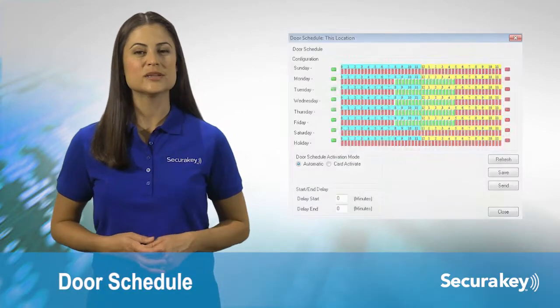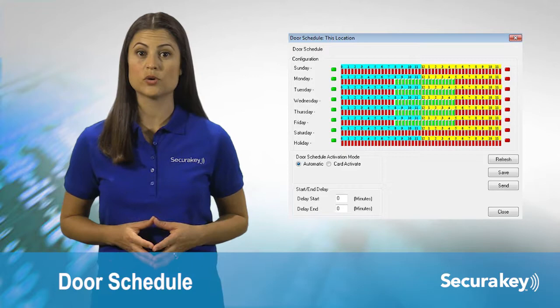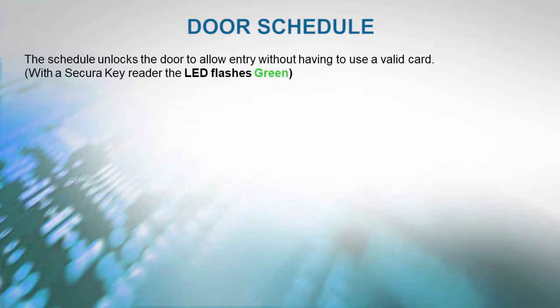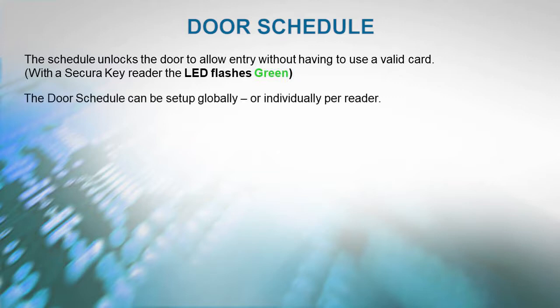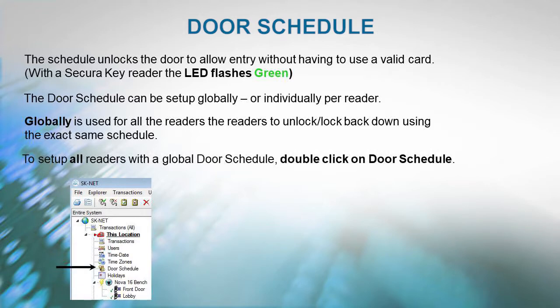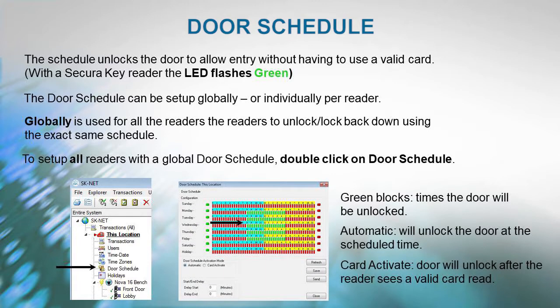A door schedule is a time zone specifically assigned to a door, which causes the door to automatically lock and unlock according to a regular weekly time schedule. This schedule unlocks the door to allow everyone entry without having to use a valid card. The LED on the Secura Key Reader will be flashing green to indicate you do not need to use your card. The door schedule can be set up globally or individually per reader. To set up all readers with the same door schedule, double-click on Door Schedule. Automatic will unlock the door at the scheduled time; Card Activate means the door will unlock after the reader sees a valid card read.